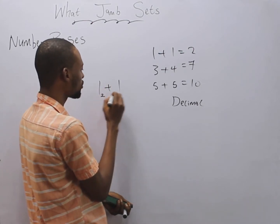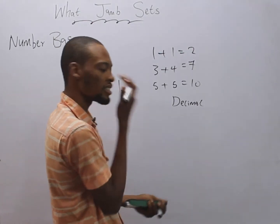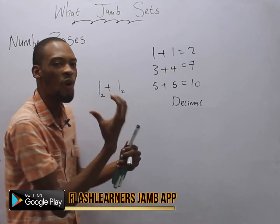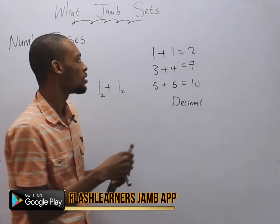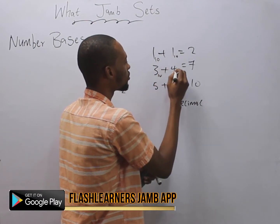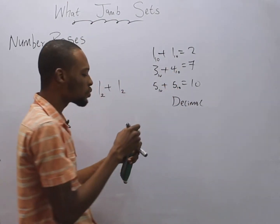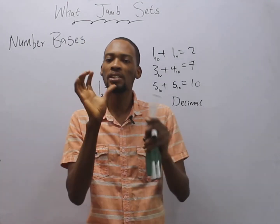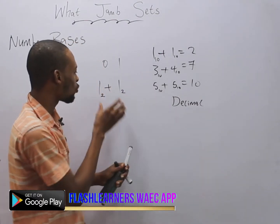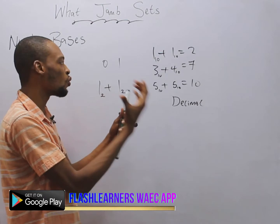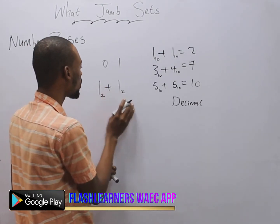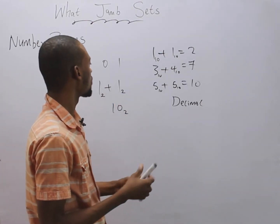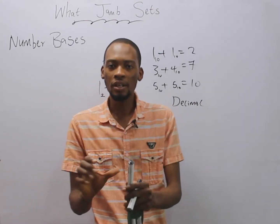If I say one plus one and I put two here and two here, this is no longer equal to two, because we are no longer dealing with base ten or decimal numbers. In base two, we deal with zero and one — that is the highest number in base two. That is why one plus one can't be two; it can't go beyond one. So one plus one is simply one zero in base two.